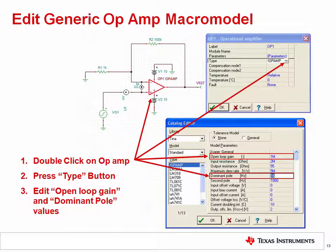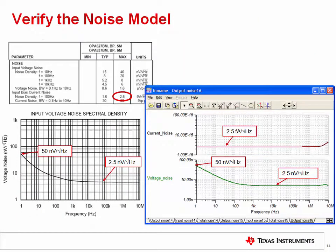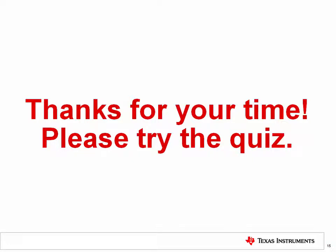Let's do a final simulation to confirm that we did not make any mistakes. Using the noise test circuit introduced at the beginning of this video, rerun the noise simulation. After our adjustments, the model now matches the datasheet. This op amp model can now be used in any application circuit to measure noise. After you build a few of these noise models, you will find that it is a relatively simple procedure. In some cases, you may even choose to develop your own noise model even if an accurate one exists, because a customized noise model provides the flexibility to adjust or eliminate noise sources, giving you the ability to experiment and determine the dominant source of noise. That concludes this video. Thank you for watching. Please try the quiz to check your understanding of this video's content.